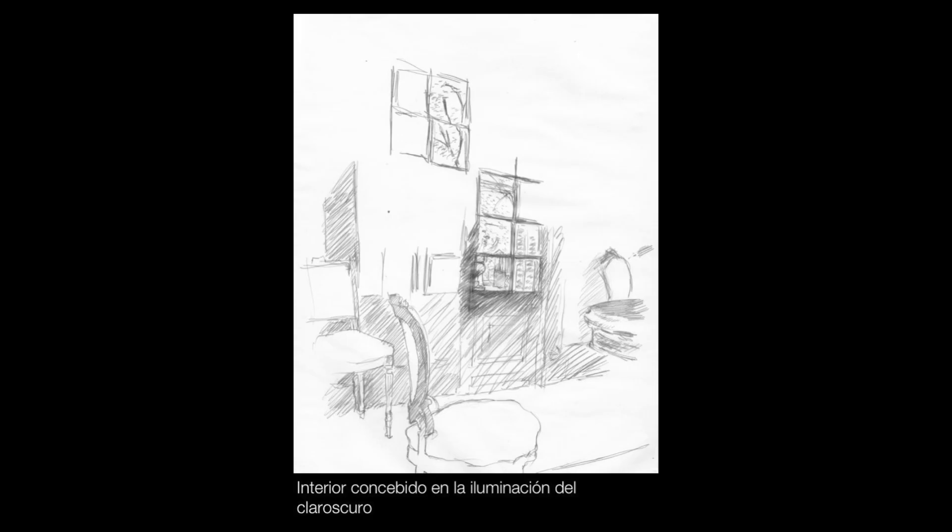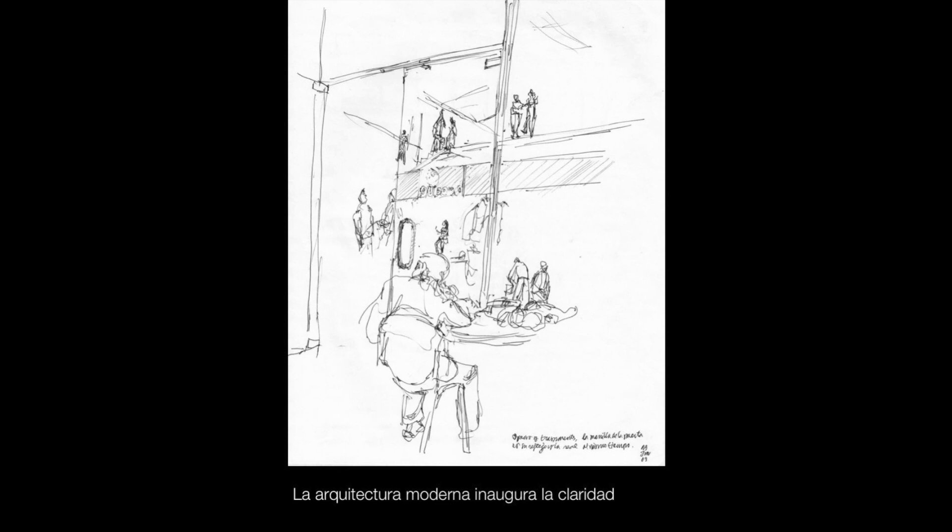Aquí tenemos, por ejemplo, dos calidades de espacio: la que están viendo en este minuto, que es el claro-oscuro del siglo XIX, y esta otra, que es la claridad iniciada por la arquitectura moderna del siglo XX.